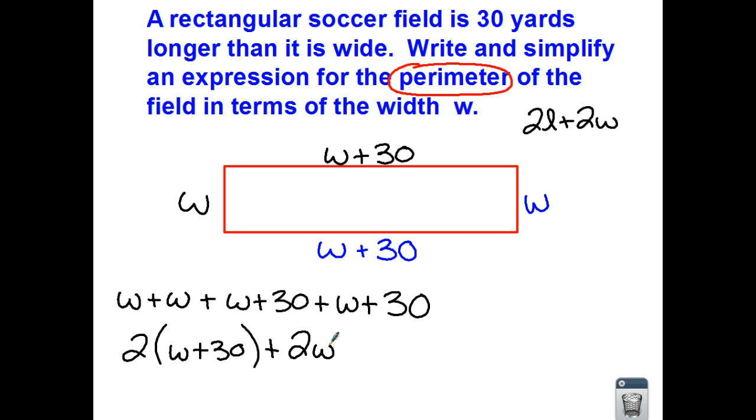Now if I were to simplify this expression, it says write and simplify, they would like us to get all of our like terms together. So if I'm looking at my first expression, I have a w, another w, a third w, and a fourth w. So I'm taking 1 plus 1 plus another 1 plus a fourth one. So I would have 4w, and then I'll get a different color here for you.